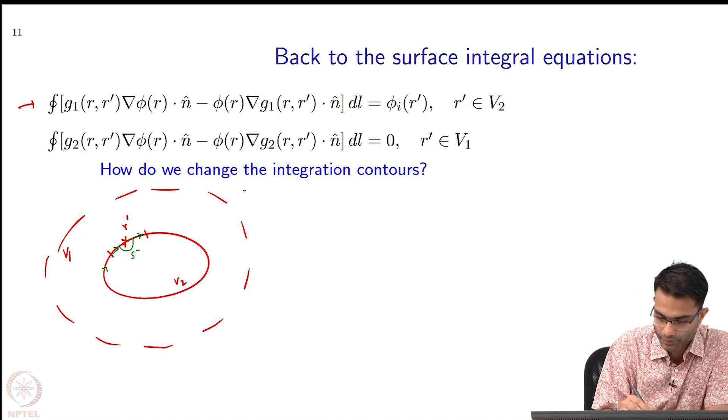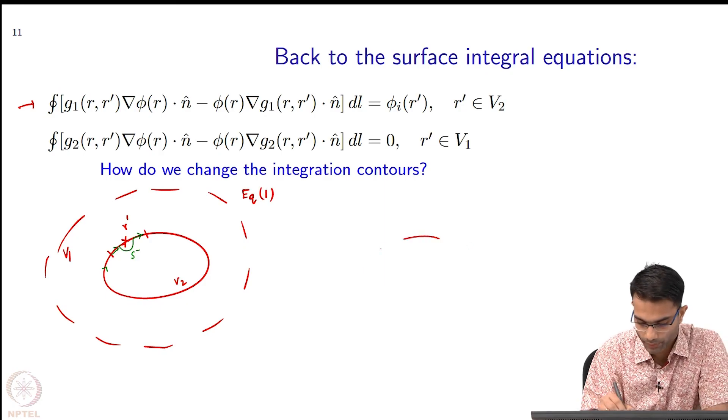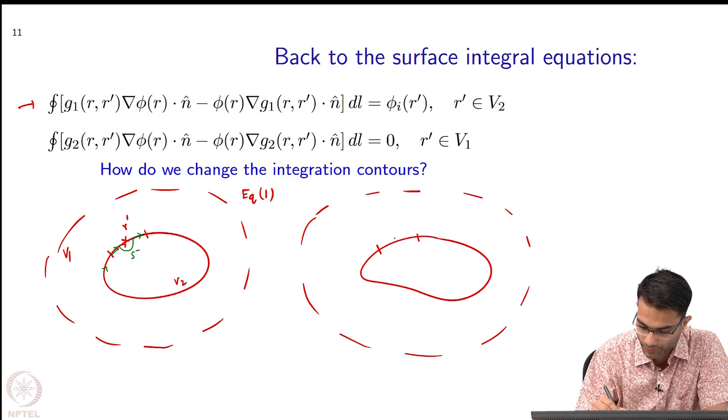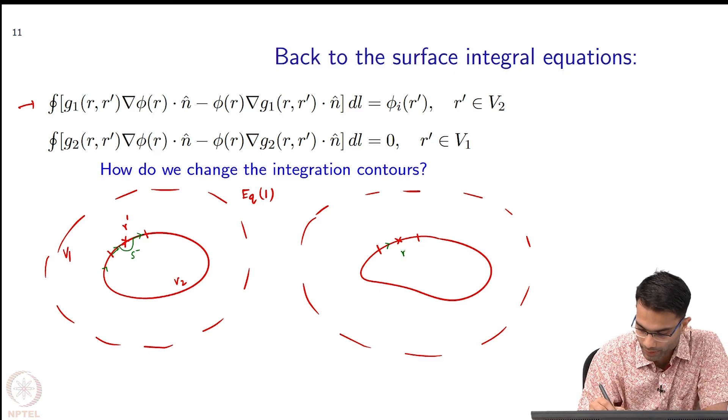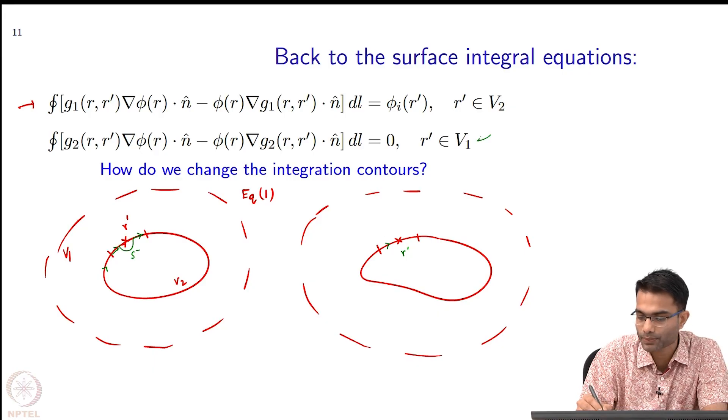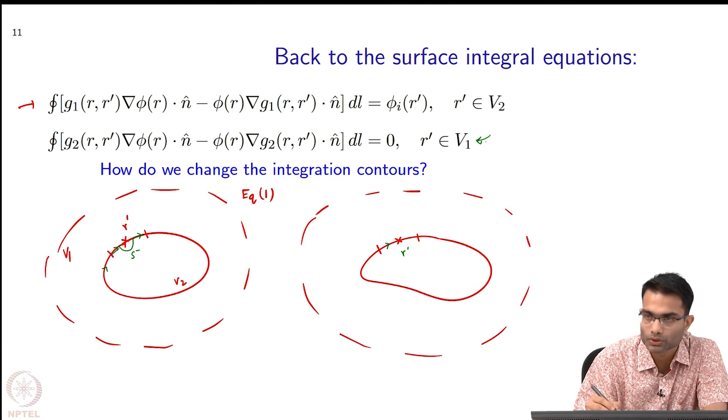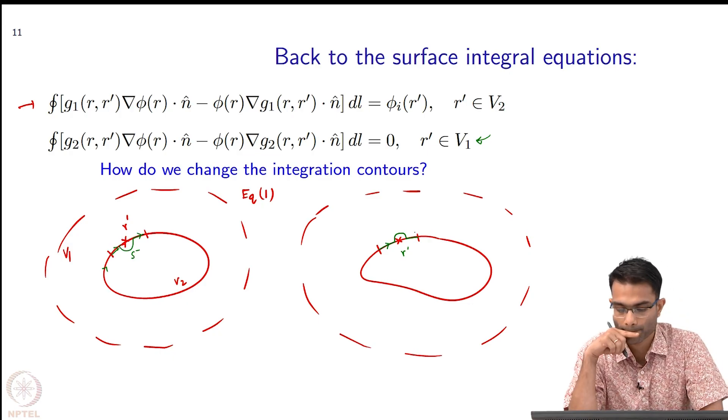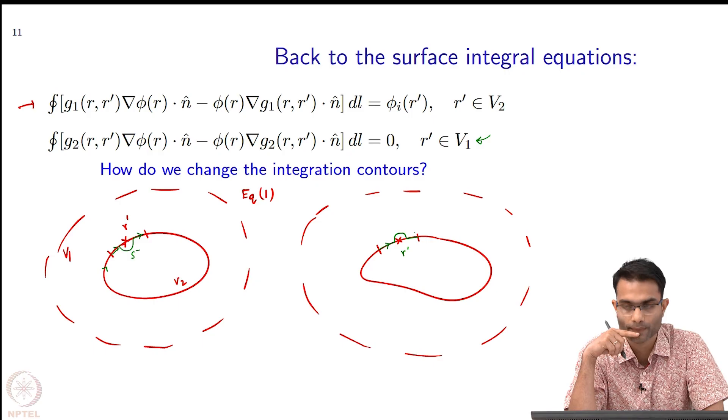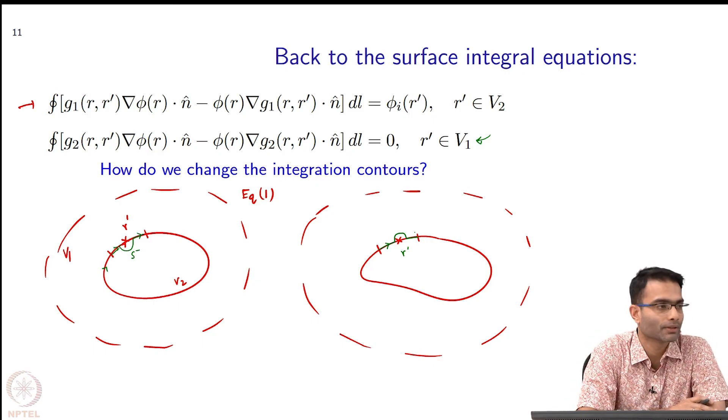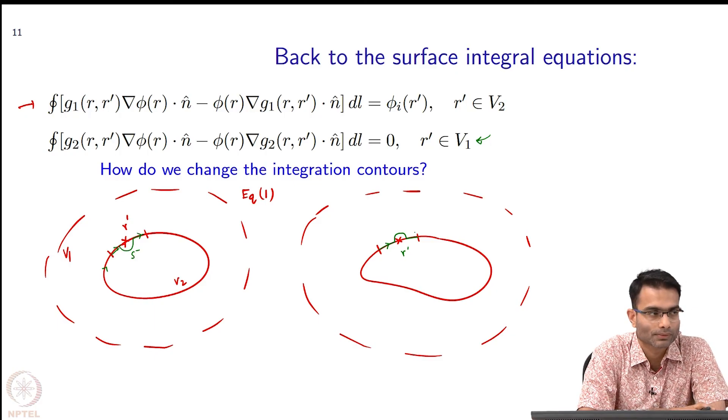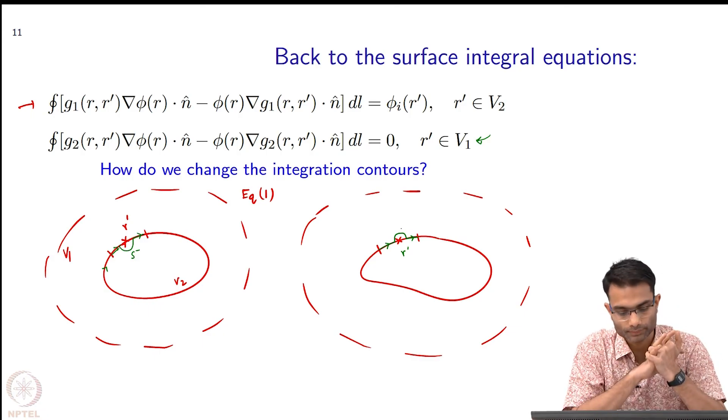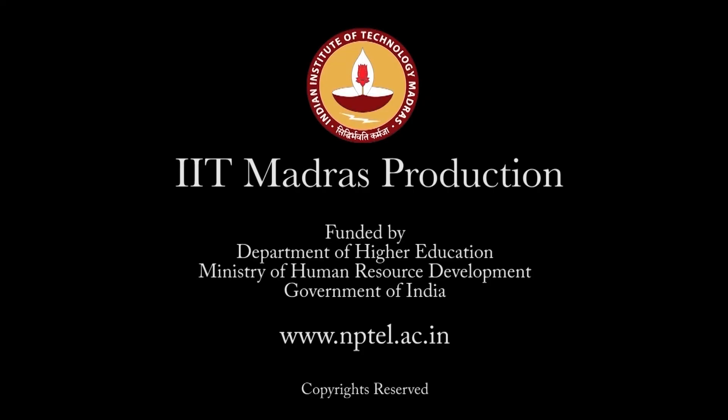That is going to be a particular strategy. This was for equation 1. For equation 2, I am drawing it separately so there is no confusion. Again this is my segment and I am going about my integration. This is my r prime. Now, r prime in the second equation is forced to belong to V1. What will happen is that is how I can do this integration. That will be the strategy that we will follow. We will bring this discussion to a close here. Thank you.